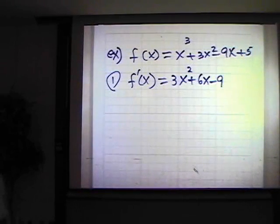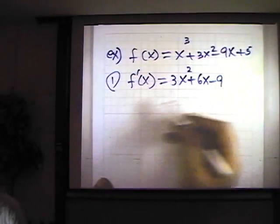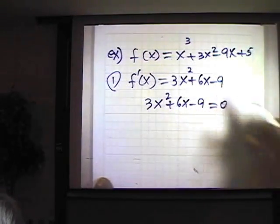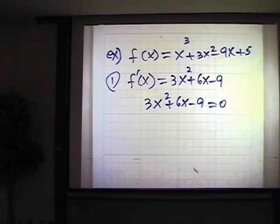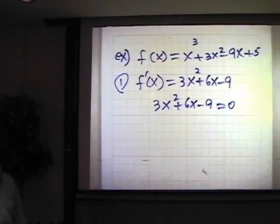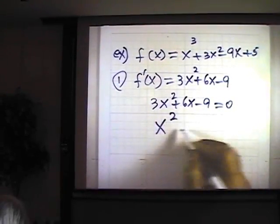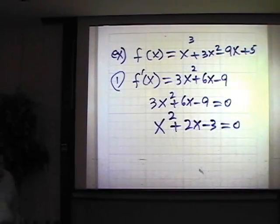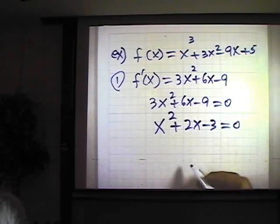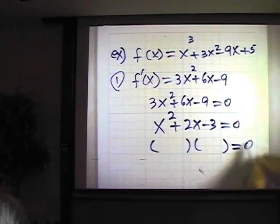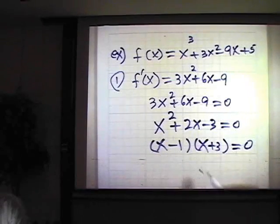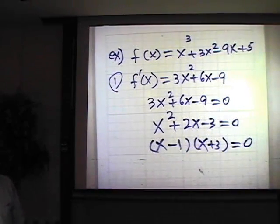Step two: set f prime of x equal to zero to find the critical numbers. So 3x squared plus 6x minus 9 equals zero. Dividing the whole equation by 3 gives x squared plus 2x minus 3 equals zero. This is a factorable quadratic, factoring as (x plus 3)(x minus 1).